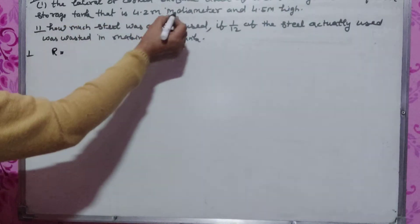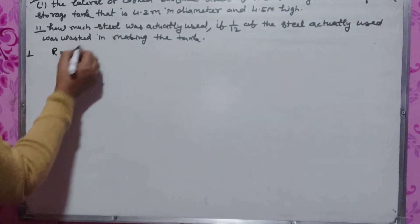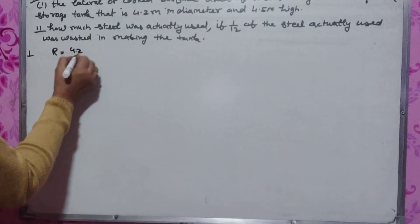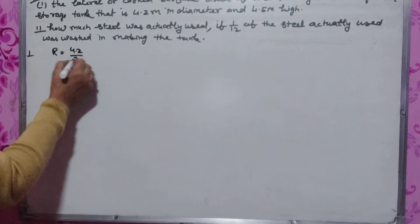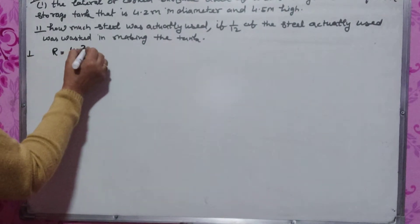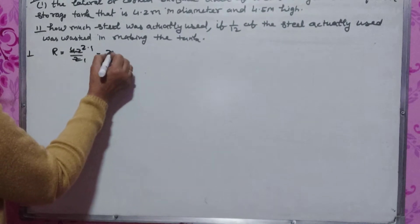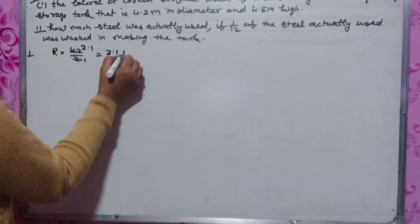Diameter is 4.2 cm. Diameter by 2 is radius. 4.2 by 2 is 2.1 cm. Radius is 2.1 m.